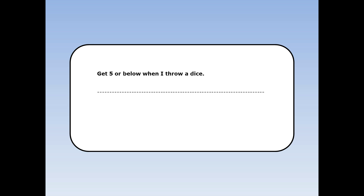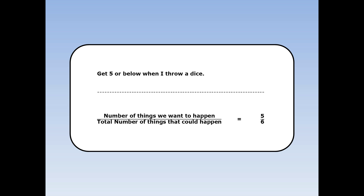What's the probability I get 5 or below when I throw a dice? The number of things we want to happen is 5, because 5 or below is 1, 2, 3, 4, 5. The total number of things that could happen is 6, because there are six numbers on a dice. The probability is 5 over 6.